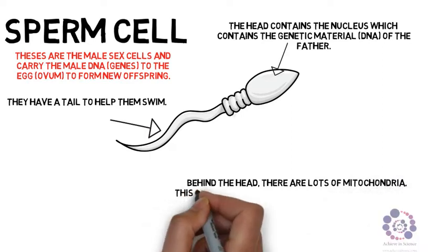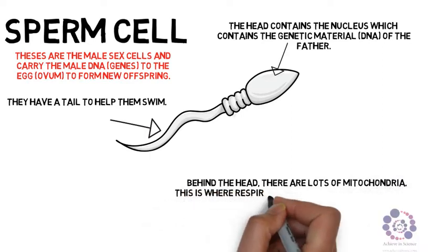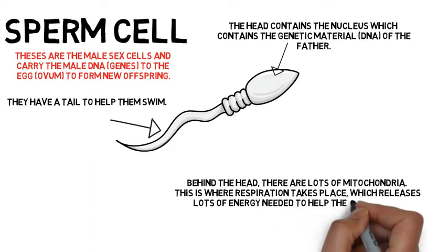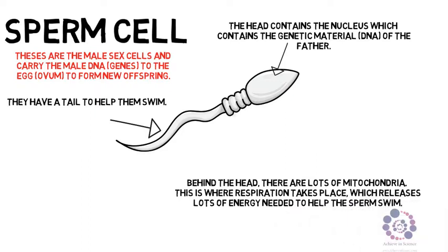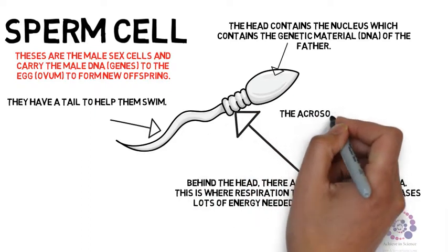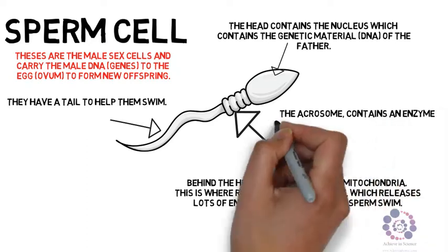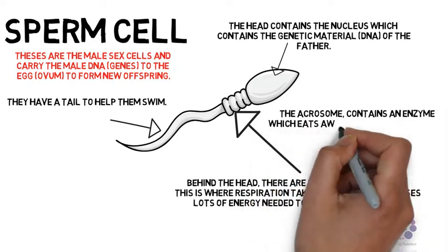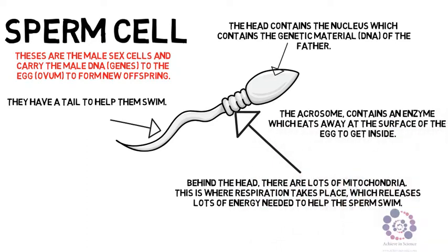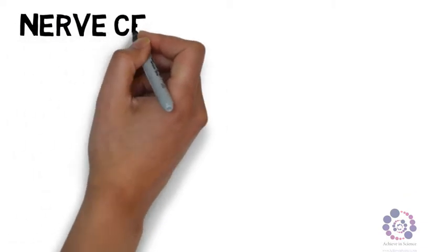Behind the head is lots of mitochondria. Mitochondria are organelles where respiration occurs. This respiration provides the energy needed to make sure the tail can move to allow the sperm to swim. Finally, the acrosome contains an enzyme so when the sperm is successful in meeting the egg, it is able to eat its way into the egg.